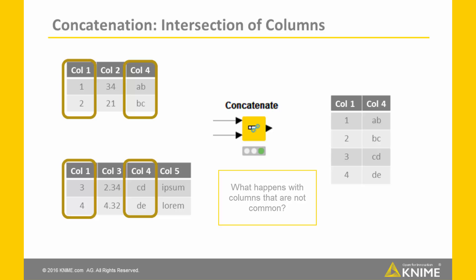So what happens with columns that are not common? Columns that are only in one input table and not in the other. Well, it depends on what you choose in the node configuration window. You can choose to keep the intersection of columns, that is, only the common columns between the two tables, like in this case here,